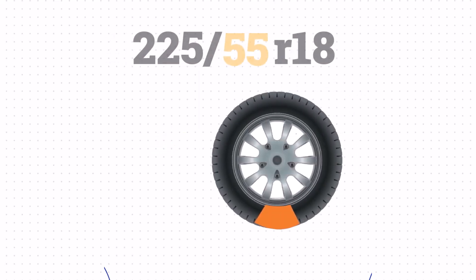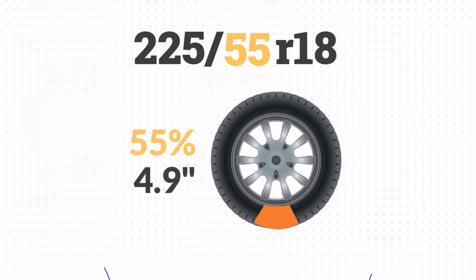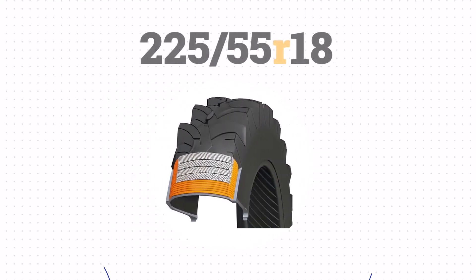Then we have the aspect ratio. This number represents the size of the sidewall compared to the section width. The 55 in this case means that the sidewall is 55% of the width, which calculates to about 4.9 inches. The R indicates radial construction as opposed to bias ply.